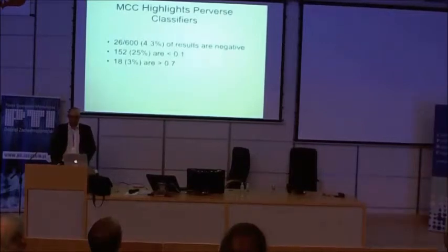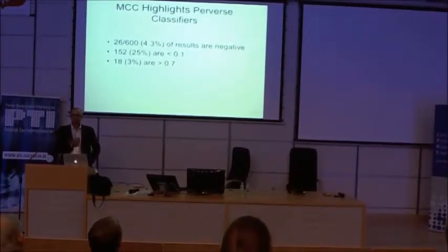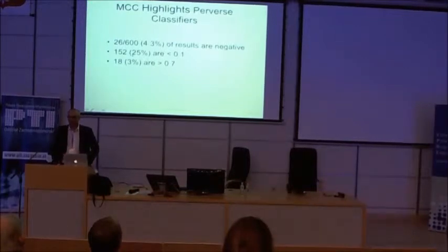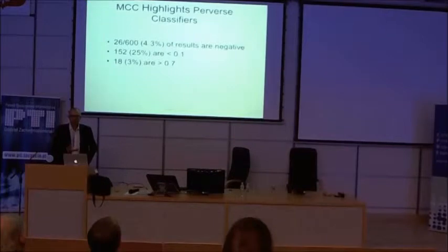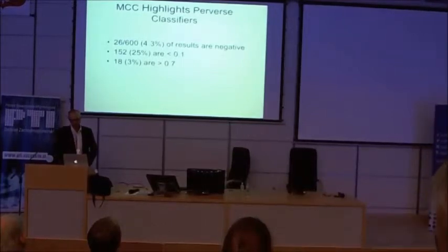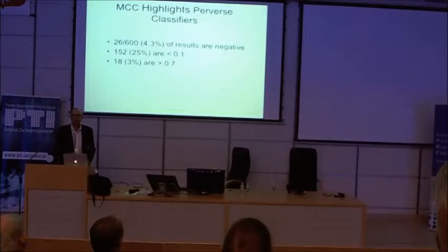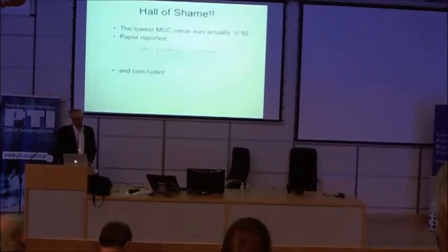To summarise: over 4% of results have negative correlation coefficients — these are cases where you could instantly improve performance by just doing the opposite of what your classifier says. And we have a quarter of results with a correlation coefficient of less than 0.1, which in terms of effect size is so small it's really not worth getting excited about. To all intents and purposes, a quarter of our results are practically indistinguishable from random, even if you can show statistical significance.